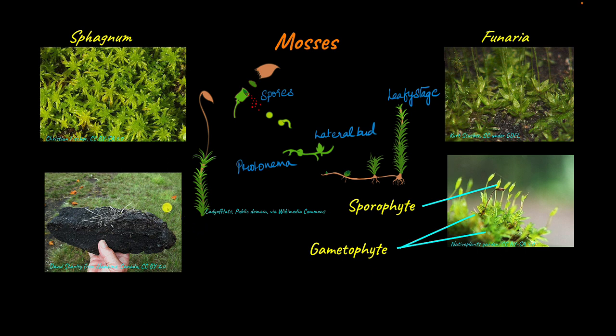Ecologically, bryophytes play a very important role that we cannot directly see. When a natural disaster like a forest fire destroys a habitat, bryophytes are the first species to colonize the land. As they grow, they break down the rocks which leads to soil formation. With the presence of soil, higher plants are able to grow there. Bryophytes also serve as food for some herbivores, which brings animals into the habitat as well.